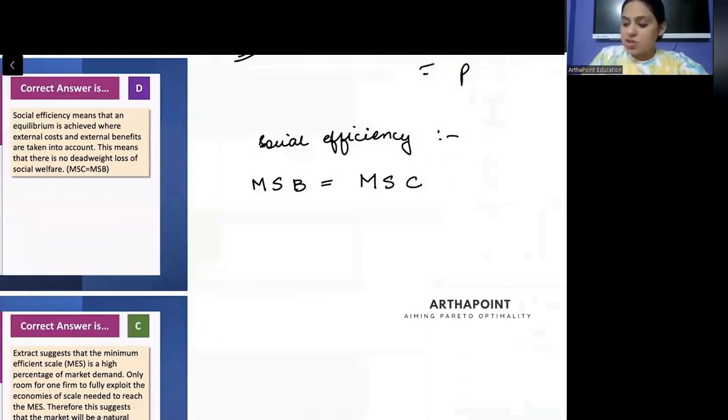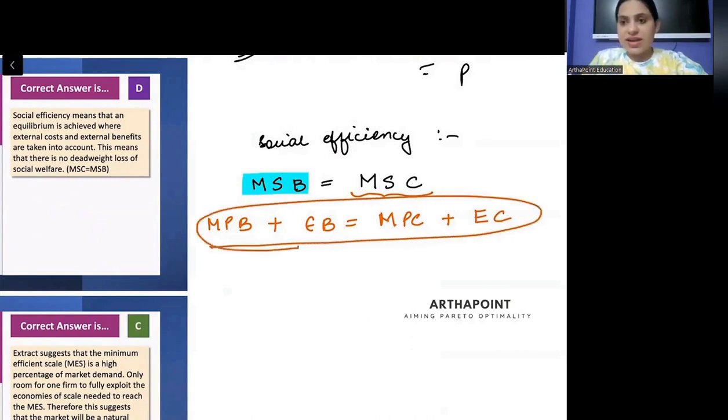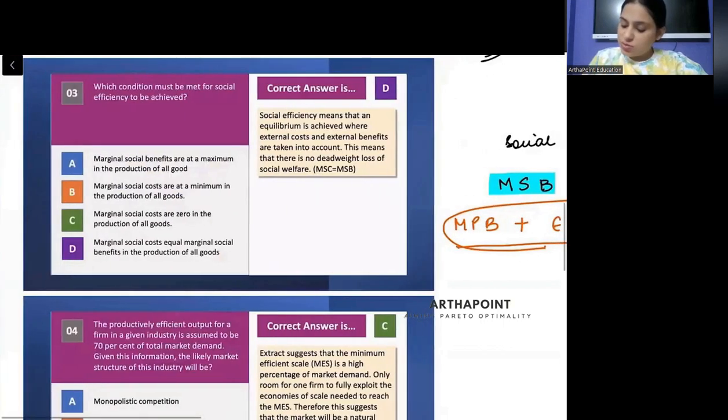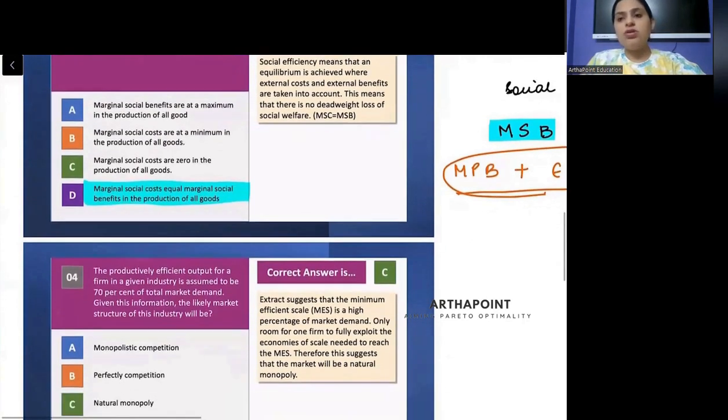But what is marginal social benefit? Marginal private benefit plus external benefit. What is marginal social cost? Marginal private cost plus external cost. So this is with externalities. This is the equilibrium condition with externalities. So it should be D. Marginal social cost is equal to marginal social benefit in the production of all the goods.